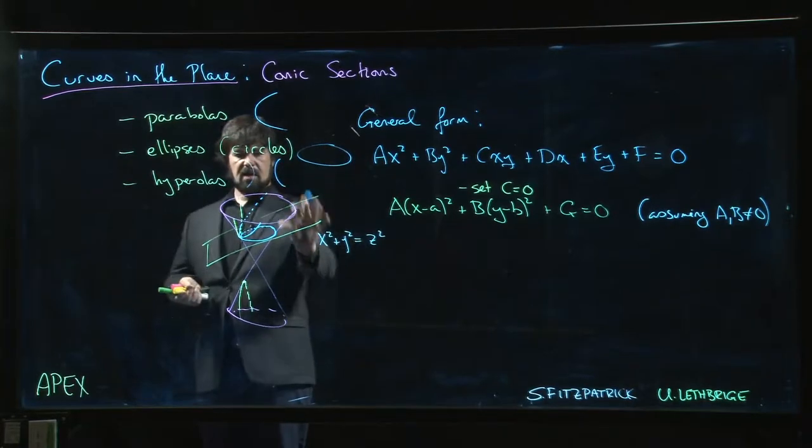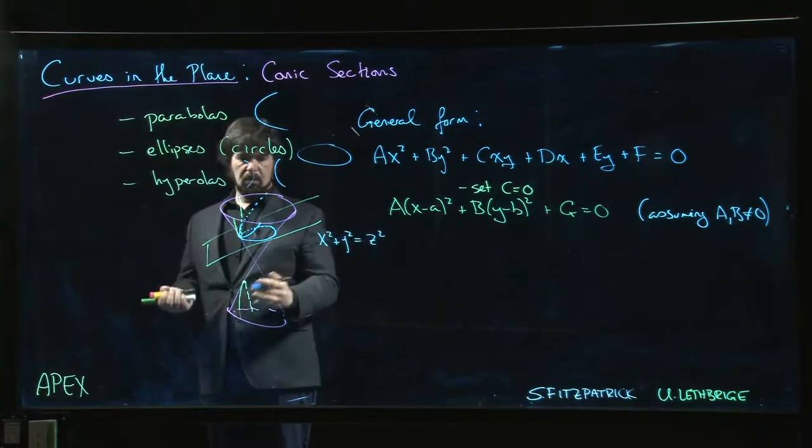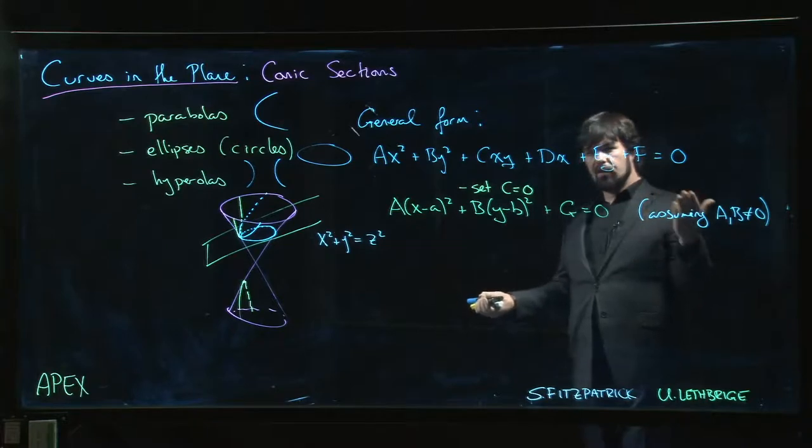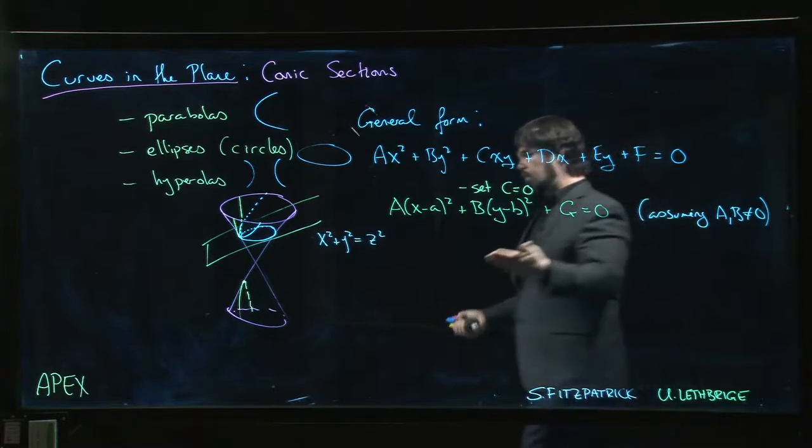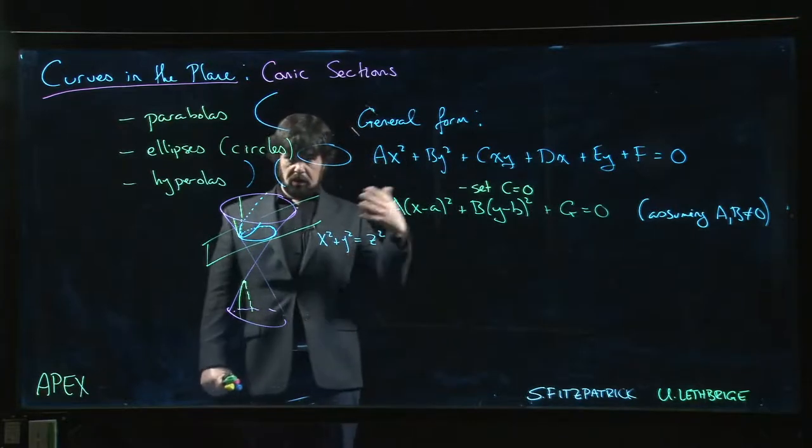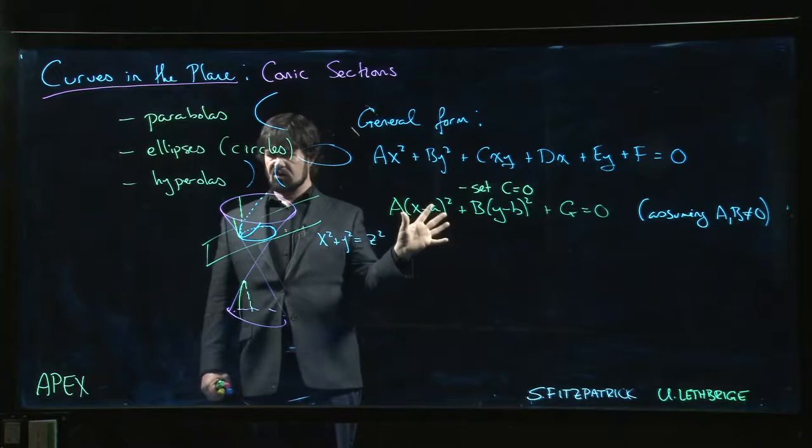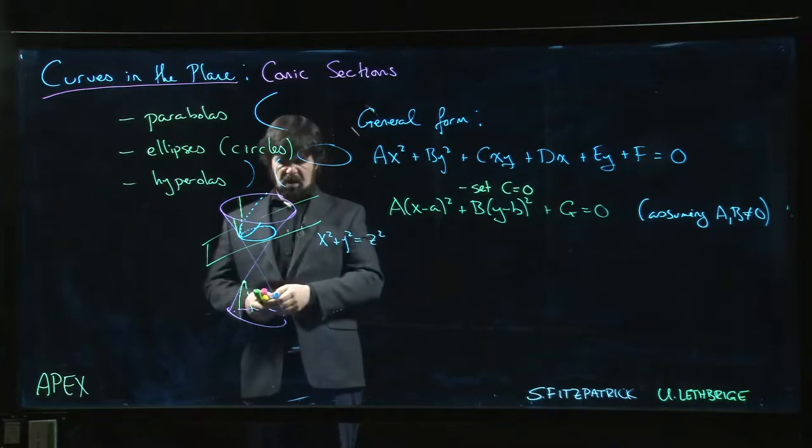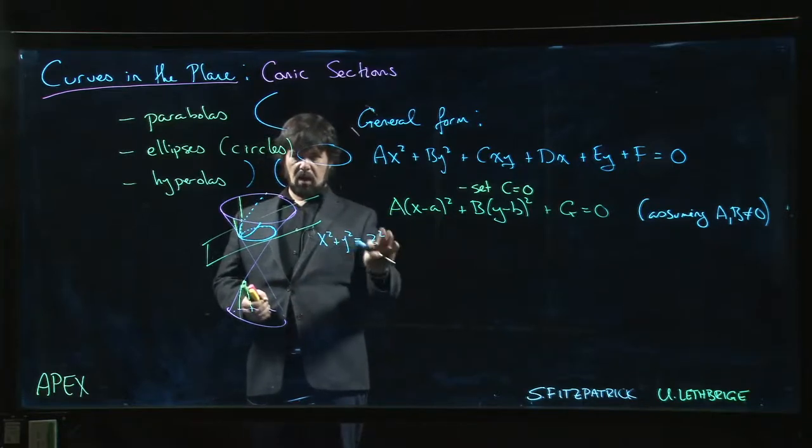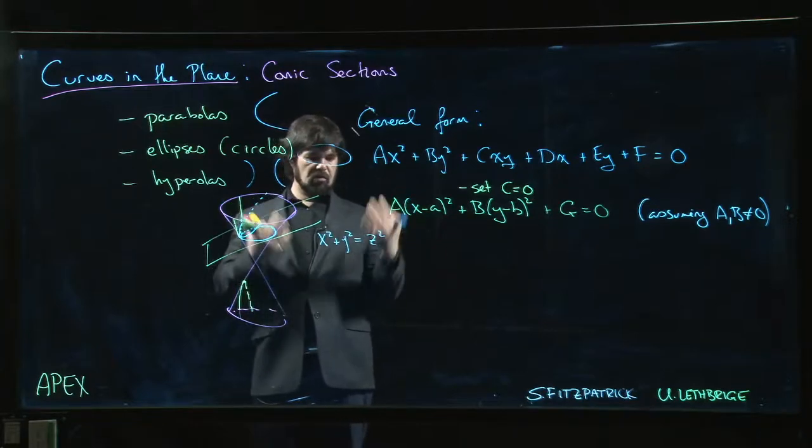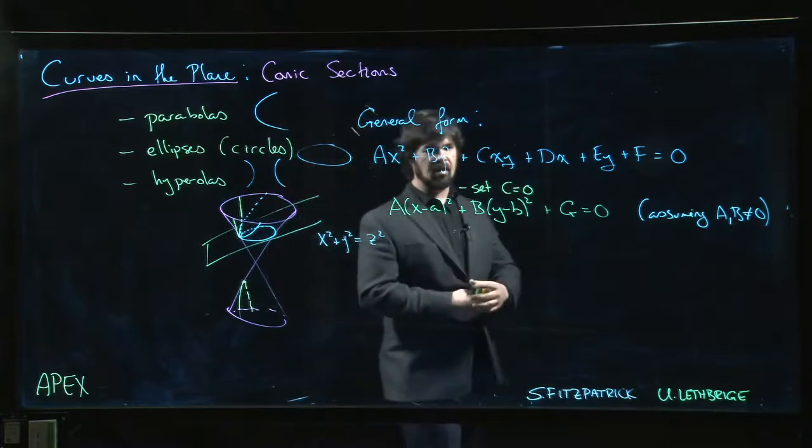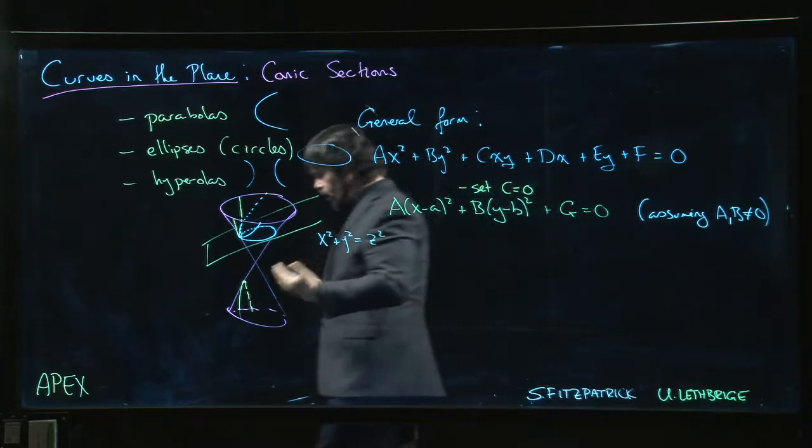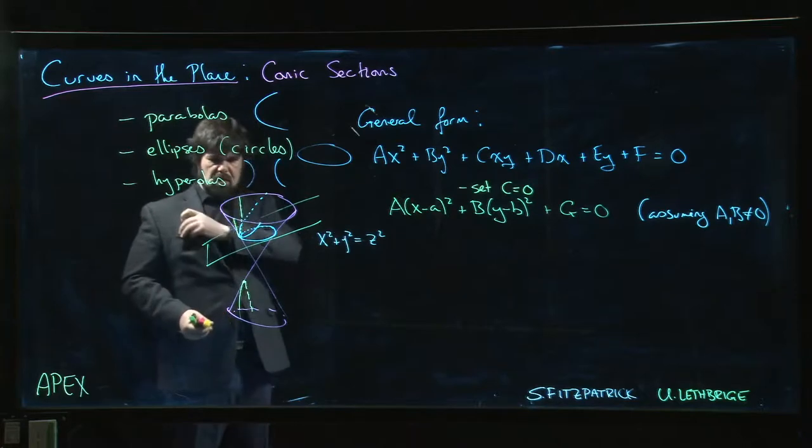So all of these conic sections - parabolas, ellipses, hyperbolas - you can actually obtain all of them by taking a plane and cutting the cone. One of the exercises you might do once you're comfortable working in more than two variables, once you get to calculus in several variables or you've done some linear algebra, is you learn how to write equations of planes. That's the next chapter in Apex. You can play around with what if I take this equation, write down the equation of a plane - turns out a plane looks something like ax + by + cz = a number. You can try to satisfy both equations at once, simplify things, and with a bit of work you can get down to an equation that looks like this.